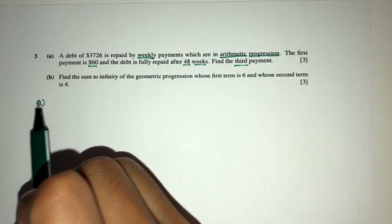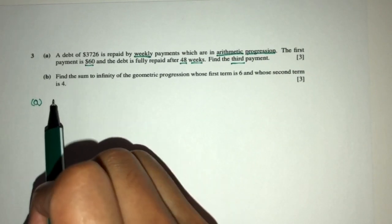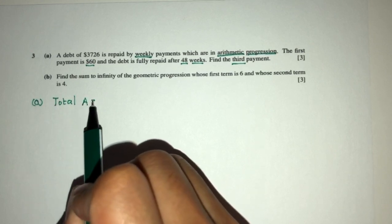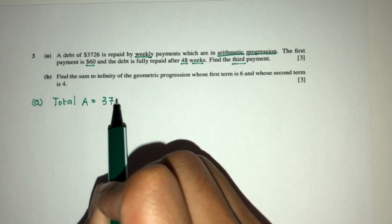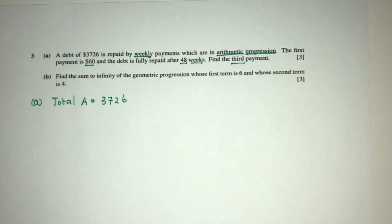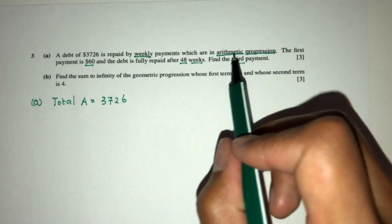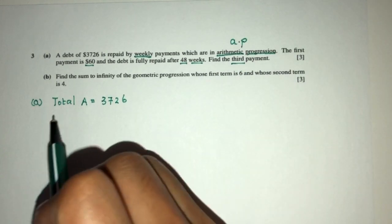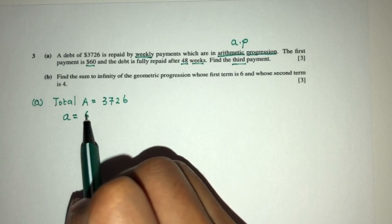The amount, the total amount is equal to $3,726. And also we know that it is an AP, given to you by the question. And the first term, we call this A, first term is given by $60.